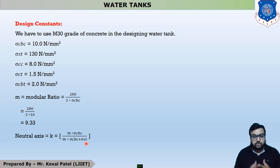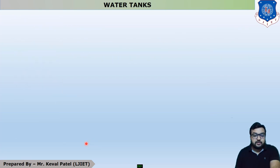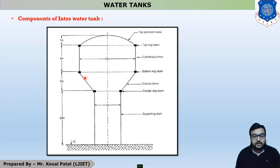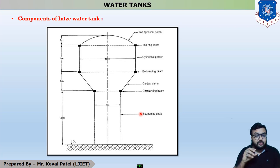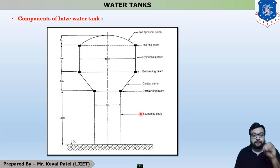In the next lecture we will discuss the other three design constants, and after that we will discuss our first type of example which is the Intze tank. The components of an Intze tank are: top spherical dome, top ring beam, cylindrical portion, middle ring beam, conical dome, bottom ring beam, and supporting shaft. These components of the Intze water tank will be discussed in detail in the next lecture — this is only a reference figure.